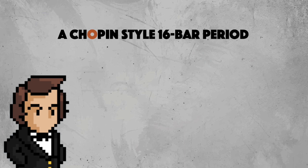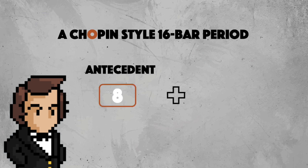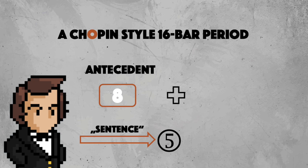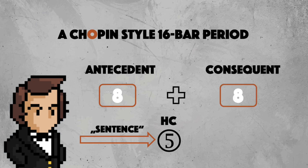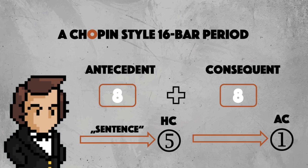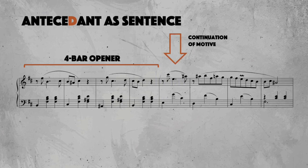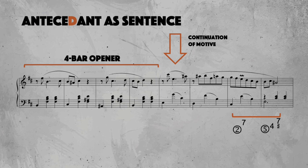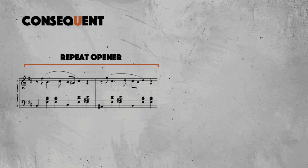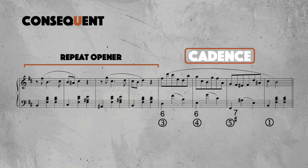Now I show how to draw a 16-bar theme from this opener, following a formal shape that is very common in Chopin's music. The antecedent itself usually displays a sentence structure that's driven towards a half cadence. The consequent picks up the initial idea again and then closes with an authentic cadence. I'm taking the 4-bar 1-5-5-1 as the initial idea. The 5th bar typically inaugurates a motion towards the half cadence at the end by continuing and increasing the motivic drive, eventually dissolving into a stream of 8th notes after the peak. The consequent just picks up the opener again and closes via a 4-bar cadential module — in this case a 3-4-5-1 cadence. Let's listen to this.